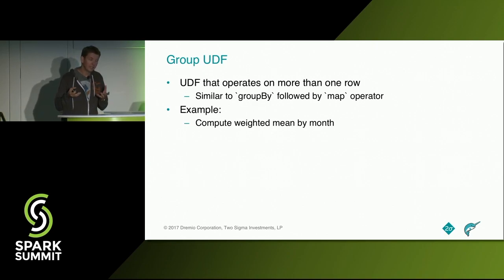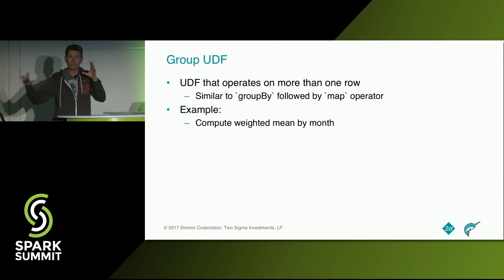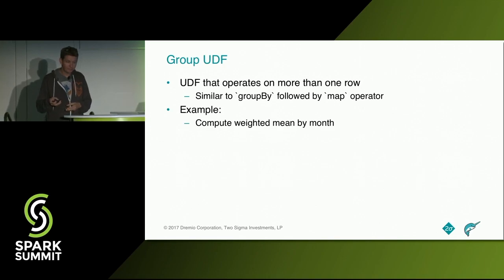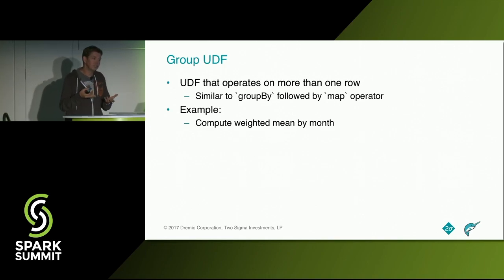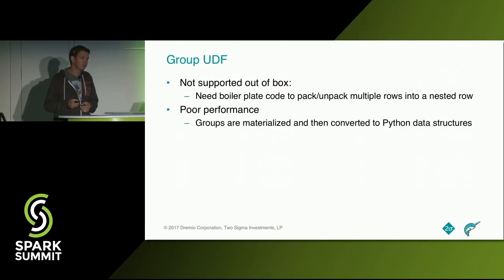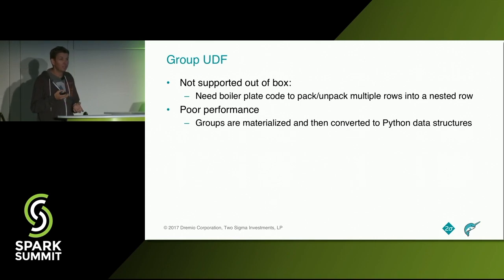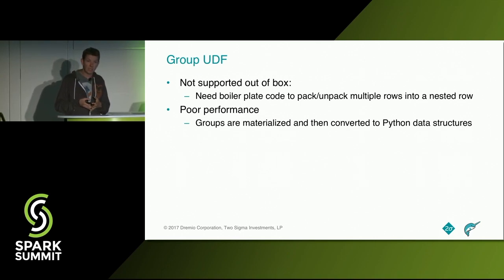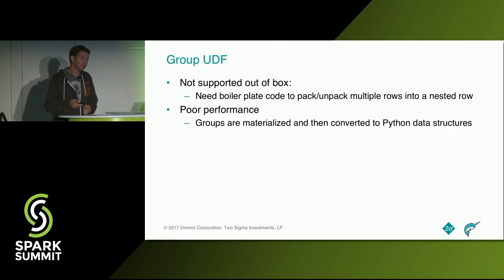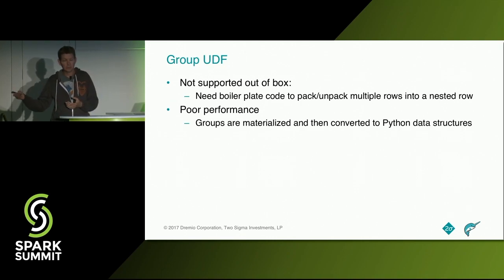A group UDF is similar to a row UDF, except you want to do it on a list of values — similar to doing a group by followed by a map operator in Scala. You could use it, for example, to compute the weighted mean by months: you group by months and then apply a function that does the weighted means. The problem is it's not supported out of the box, so there's a lot of boilerplate to pack and unpack values into lists.